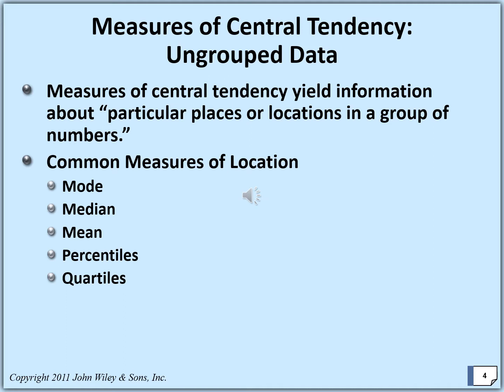Measure of central tendency reveals information about particular places or locations in a group of numbers. Common measures of location are mode, median, mean, percentile, and quartiles, and all of these have different meanings.